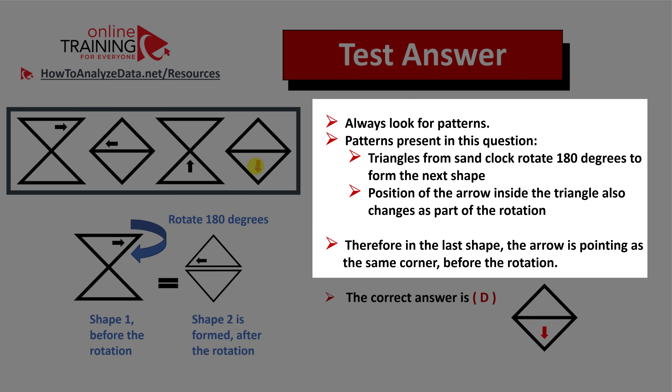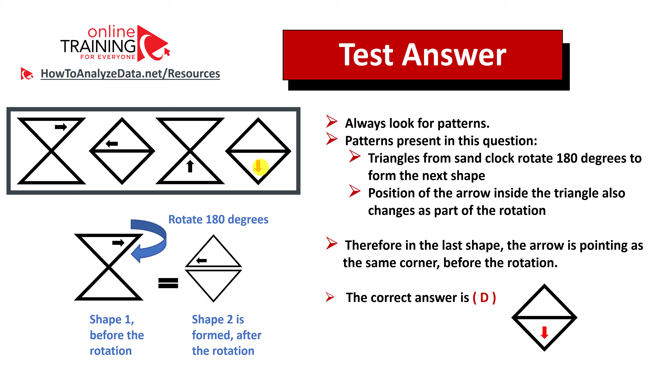The pattern consists of two items: triangles from the hourglass rotate 180 degrees to the next shape, and the position of the arrow is determined based on the rotation. This is why the next shape will be the one with the arrow pointing at the same corner as before the rotation. Hopefully you've nailed this question.